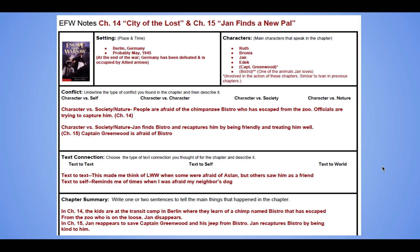A text connection for chapters 14 and 15 is a text-to-text connection. It made me think of The Lion, the Witch, and the Wardrobe when some in Narnia were afraid of Aslan — especially those on the side of the White Witch. Edmund in the beginning was afraid of Aslan, but those on Aslan's side were not afraid of him. They saw him as their friend, somebody they could trust, somebody that would come to their rescue. That kind of reminded me of Jan and Bistro, where Jan looks at Bistro as more of a friend and less like something to be scared of, but Captain Greenwood looks at Bistro as something to be afraid of.